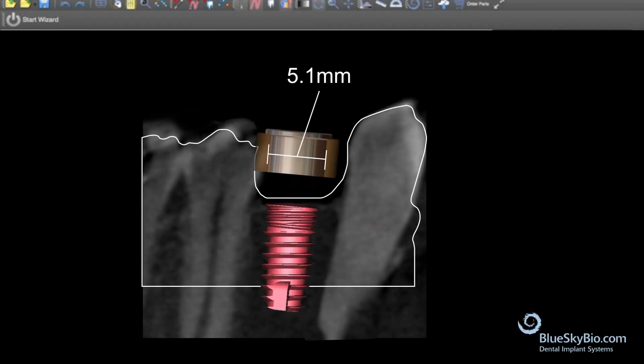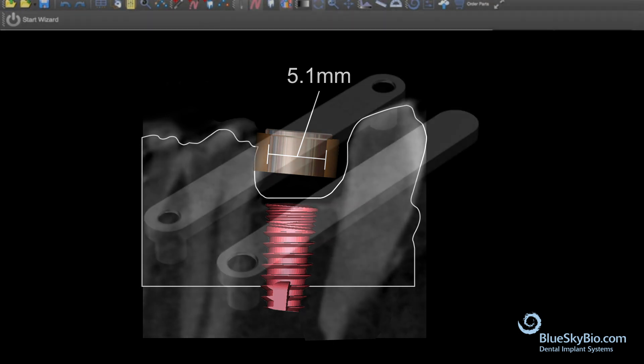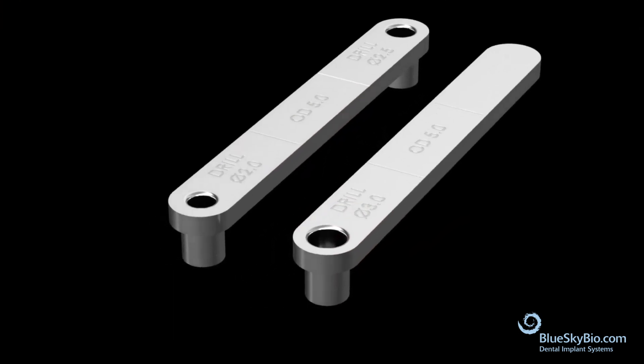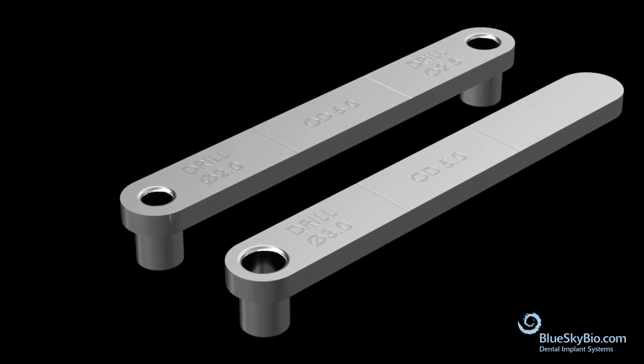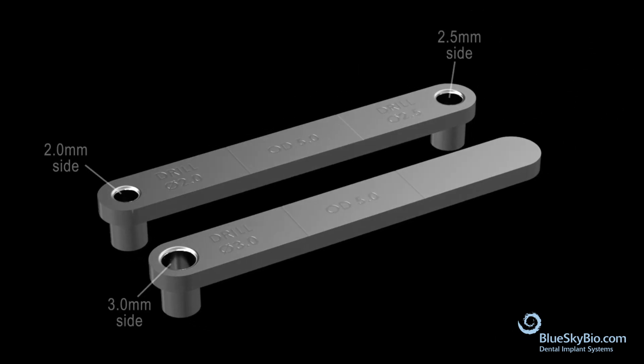For implants of 3.0 or 3.5 diameters, using Blue Sky Plan, generate an implant guide using a standard guide tube with an inner diameter of 5.1 millimeters. The tube will match the key with an OD of 5.0. Use the keys with the smaller outside diameter tube. These inner diameters are labeled near each hole.